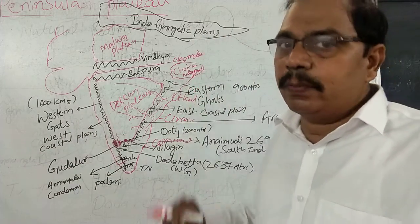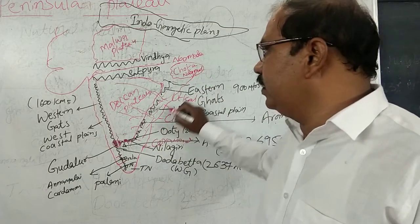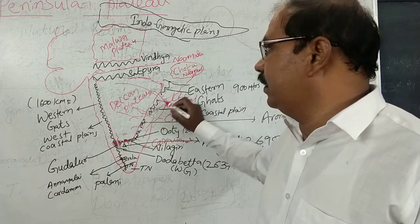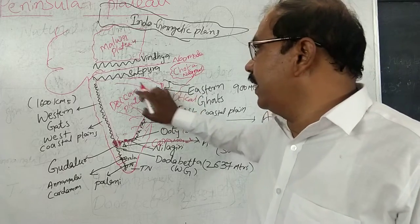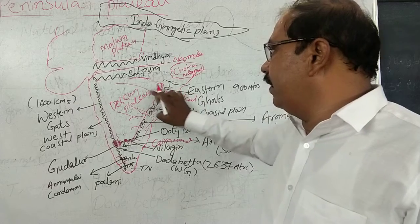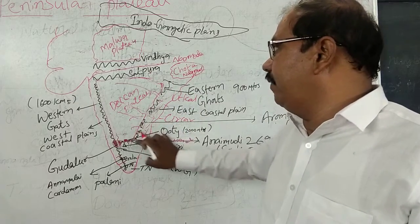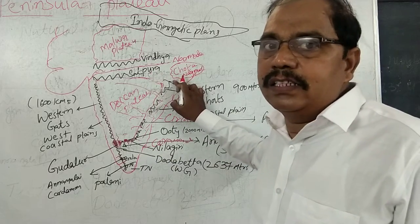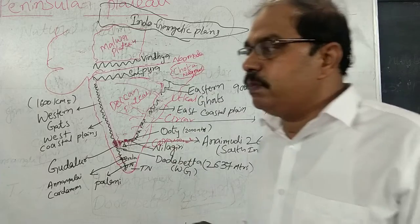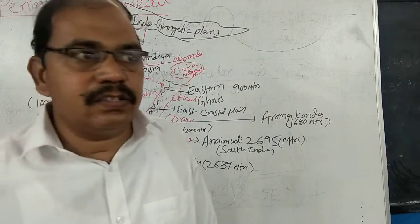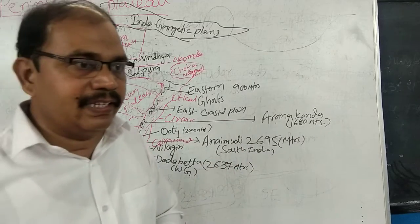The eastern coastal plain is suitable for agriculture. Many people do agriculture here — it is the most important place for agriculture. It is formed by rivers like Godavari, Krishna, Penna, Kaveri, and Mahanadi, which deposited soil in this plain, making it an alluvial plain and very good for agriculture.